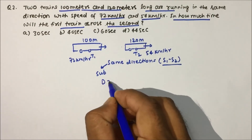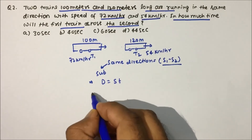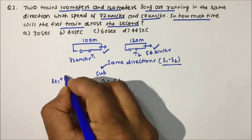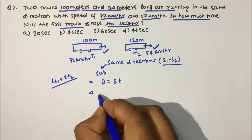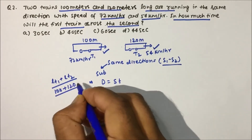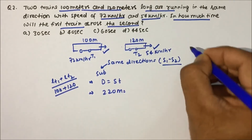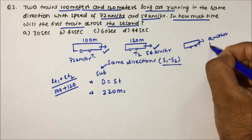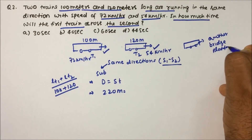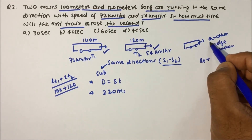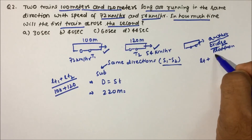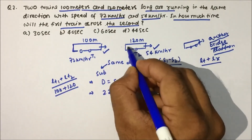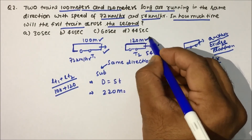Using the formula d = s × t: when a train is crossing another train, the distance equals the length of the first train plus the length of the second train. So distance = 100 + 120 = 220 meters. Whether crossing a train, bridge, or platform, the total distance always includes the length of both objects.